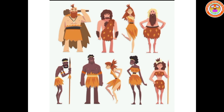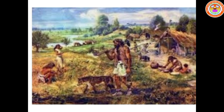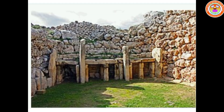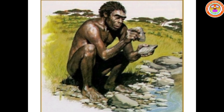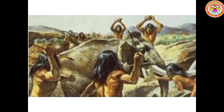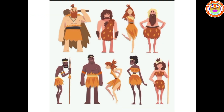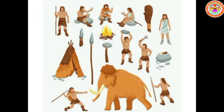Evolution means the process of change. We are going to see how the changes occur in human life. Our ancestors led a nomadic life, that is, an unsettled life. They were hunters and food gatherers. They lived in jungles or in caves. They used stone tools and weapons for protection and hunting. The most important thing is that they ate everything raw, including the flesh of animals. They wore leaves, skin of animals, and barks of trees to cover their body.